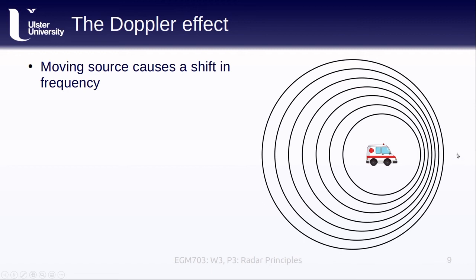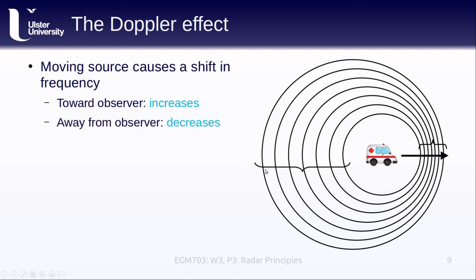If we're observing the ambulance where the ambulance is moving towards us, we see how these sound waves are essentially being compressed or pushed together. And the frequency that we observe is increased relative to the original frequency. If we're on the other side observing the ambulance moving away from us, we see how the frequency that we observe is going to be lower than the original frequency because the waves are being stretched out.